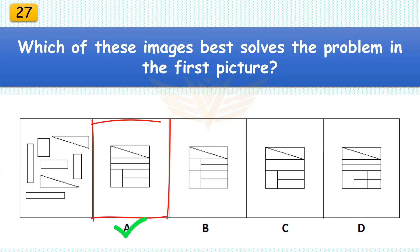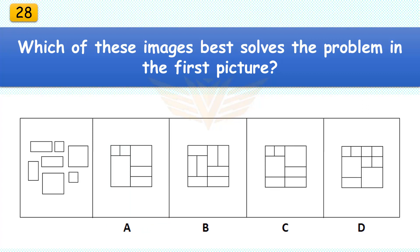Which of these images best solves the problem in the first picture? The correct answer is A. There are seven pieces in the assembled puzzle.